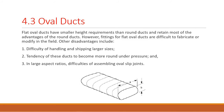Oval ducts. Flat oval ducts have smaller height requirements than round ducts and retain most of the advantages of round ducts. However, fittings for flat oval ducts are difficult to fabricate or modify in the field. Other disadvantages include: difficulty of handling and shipping larger sizes, tendency of these ducts to become more round under pressure, and in large aspect ratios, difficulties of assembling oval slip joints.